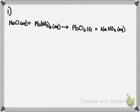On your worksheet, you're asked to find the balanced molecular, ionic, and net ionic equations for each of the problems below. So in problem number one, the equation we're given is NaCl aqueous plus Pb(NO₃)₂ aqueous yields PbCl₂ solid plus NaNO₃ aqueous.